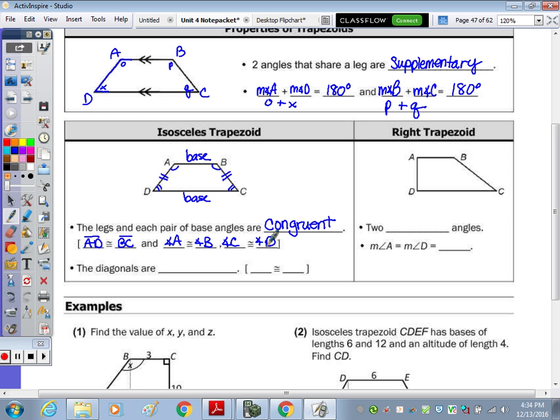And then last, the diagonals. The diagonals of an isosceles trapezoid are congruent. So I'm going to draw diagonal BD. So diagonal or segment BD is congruent to diagonal or segment AC.